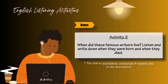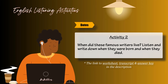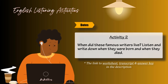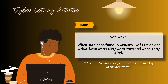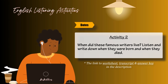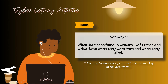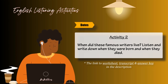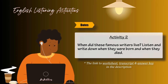Two. Do you know when D.H. Lawrence was born? Yes. He was born in eighteen eighty-five. And when did he die? He died in nineteen thirty. Three. Do you know when Jane Austen was born? She lived from seventeen seventy-five to eighteen seventeen. That's right.